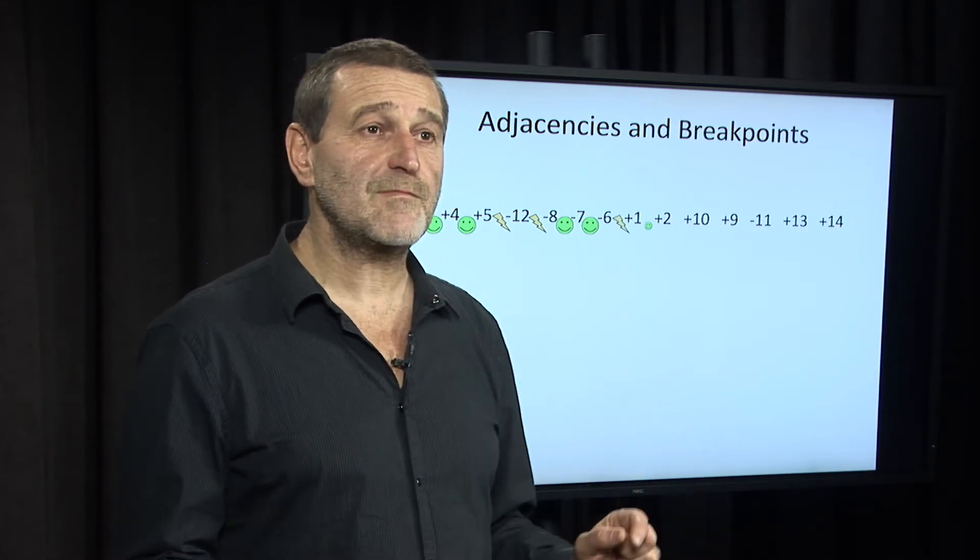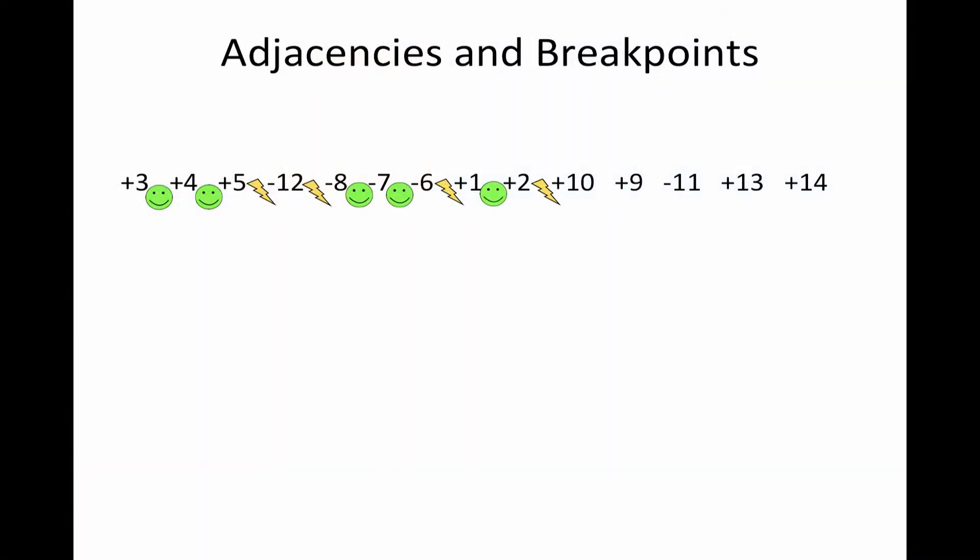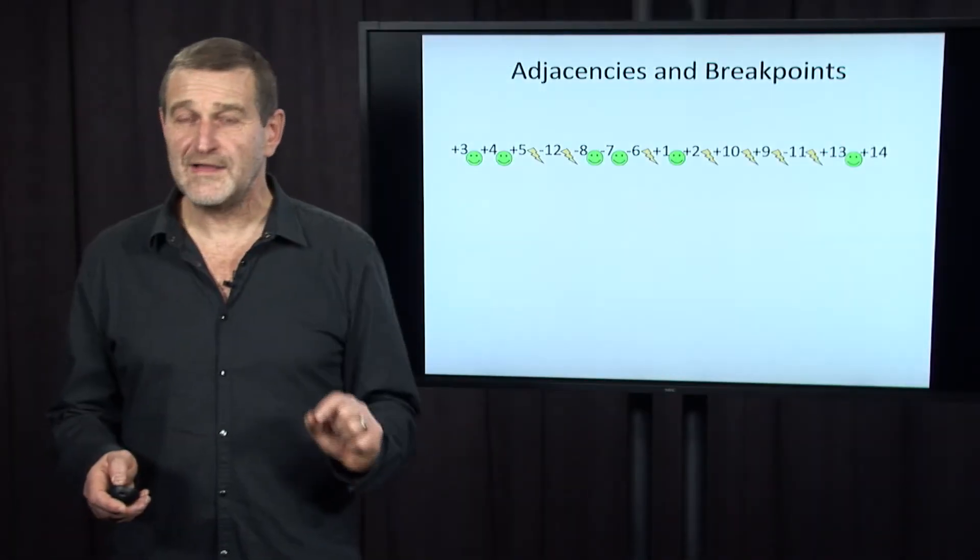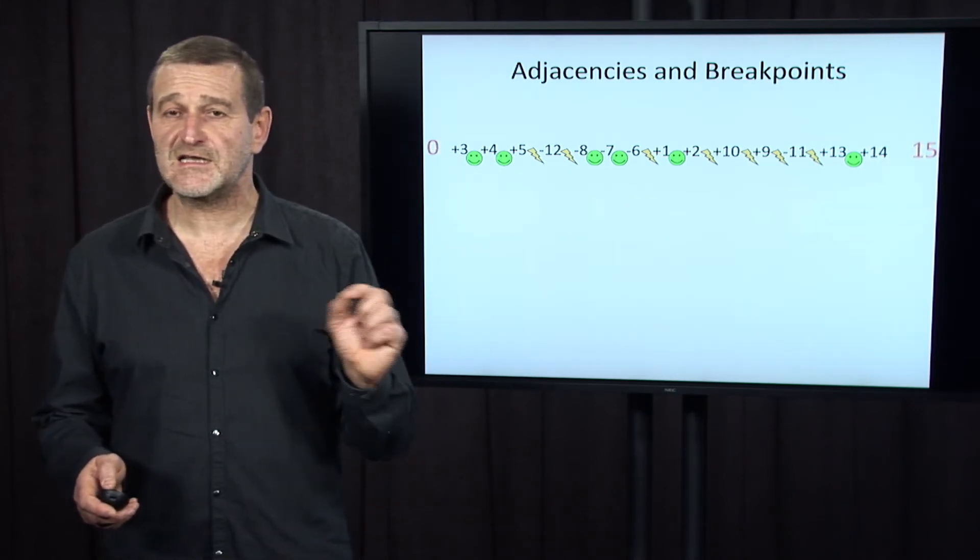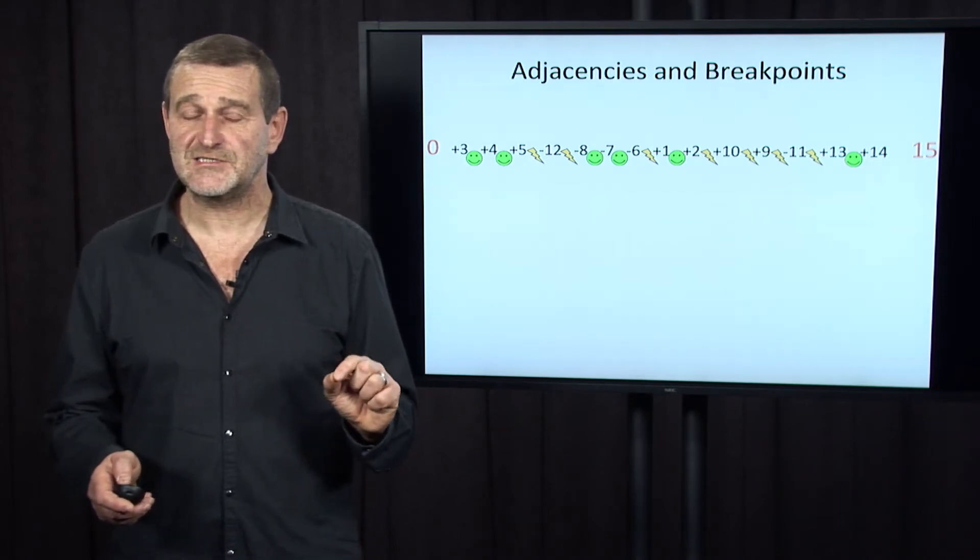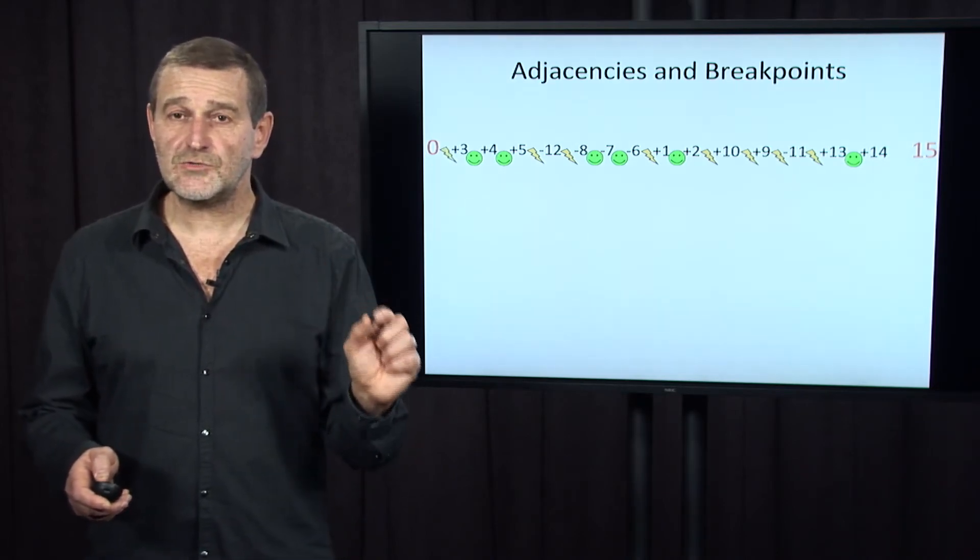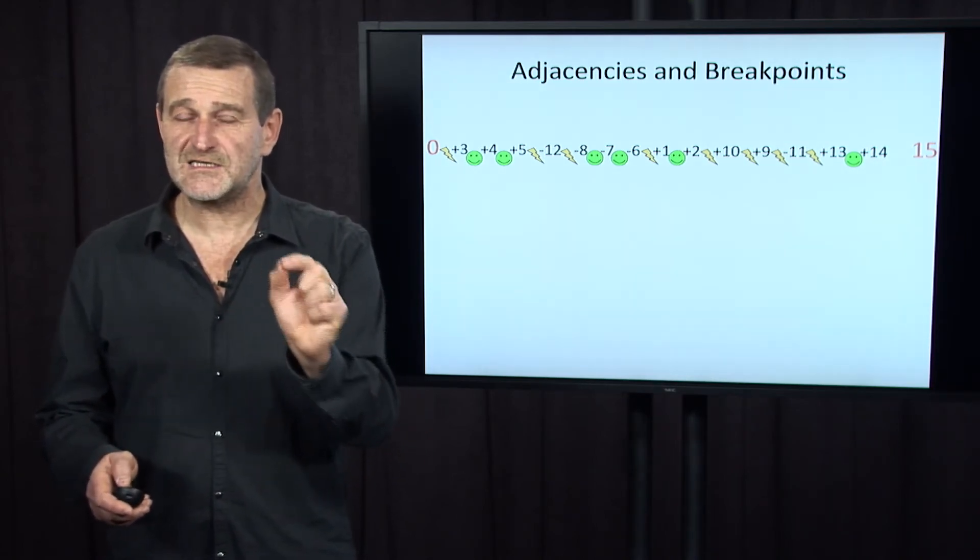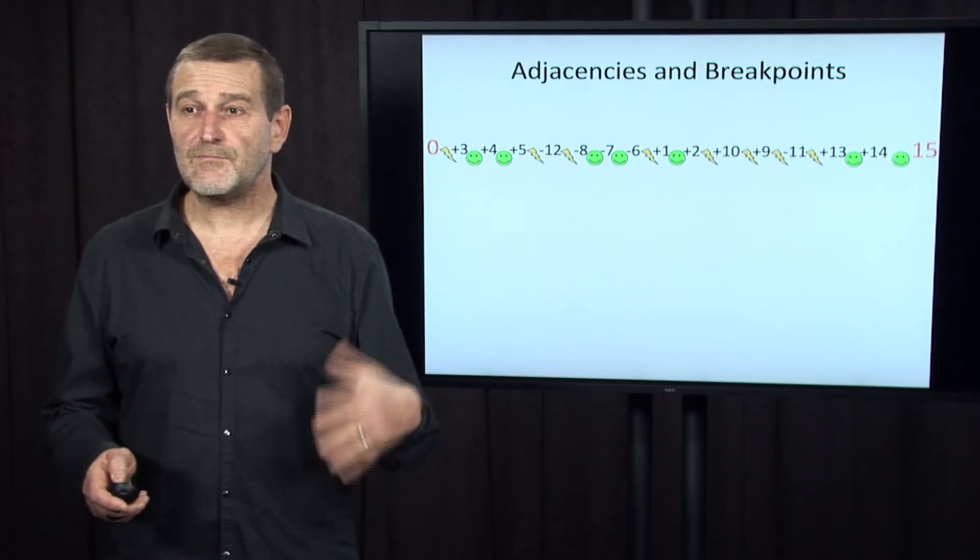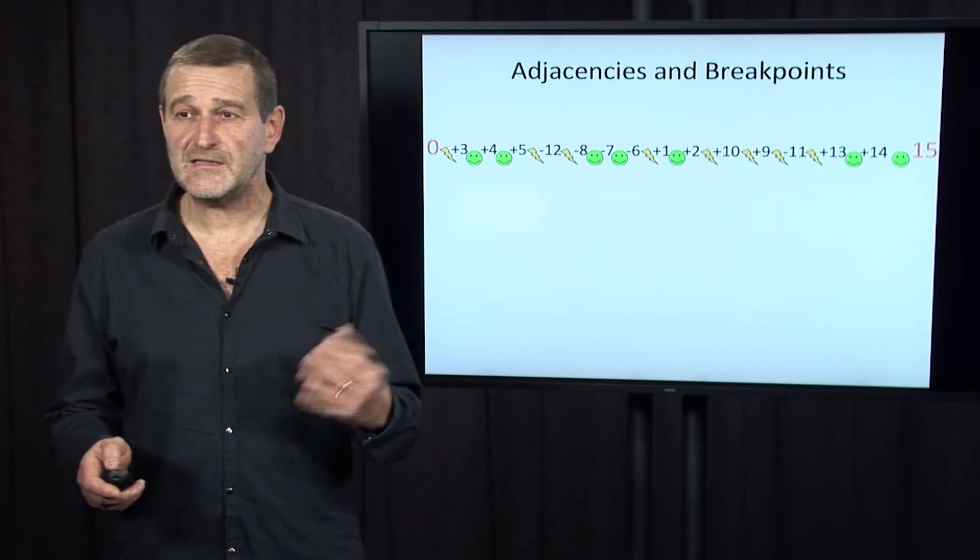Minus six plus one is definitely a breakpoint. Adjacency, breakpoint. This is also a breakpoint, think about why it is a breakpoint. Again, breakpoint, breakpoint, and finally, adjacency. I've done not quite yet, because there are two more implicit elements of this permutation, zero and n plus one, that describes the start and end of this permutation. And zero and plus three is a breakpoint, because zero should not be next to plus three. It should be next to plus one. And plus fifteen is adjacency.